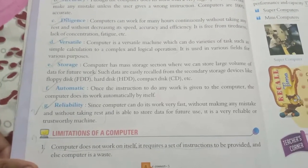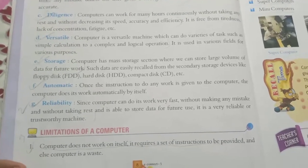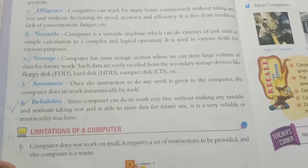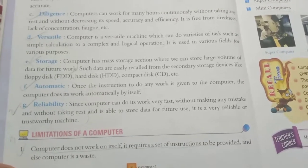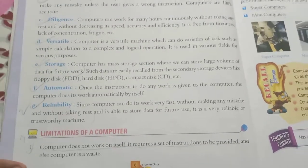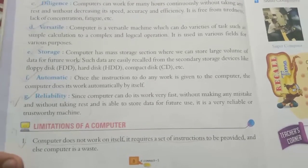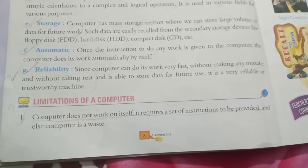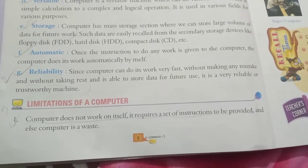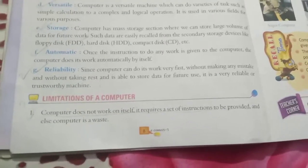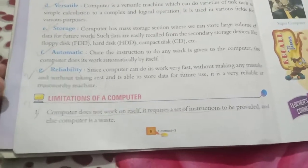A computer can do its work very fast without making any mistakes and without taking rest, and it is able to store data for future use. It is a very reliable and trustworthy machine. However, a computer does not work on itself — it requires a set of instructions to be provided, otherwise it is of no use.